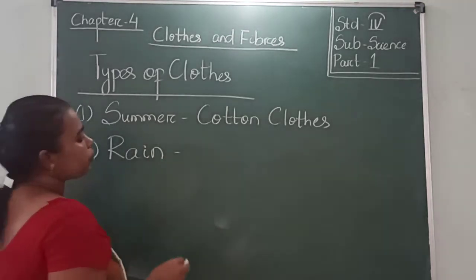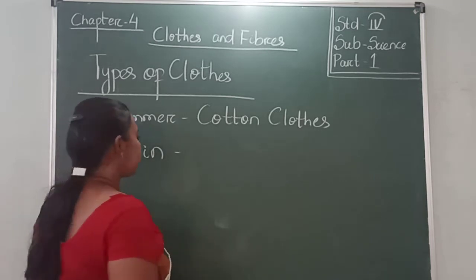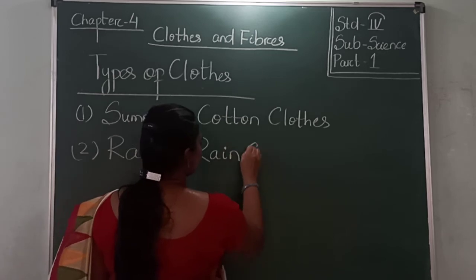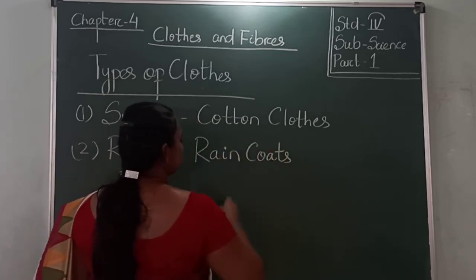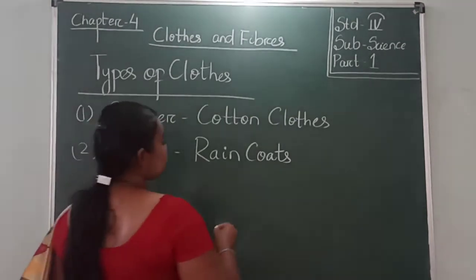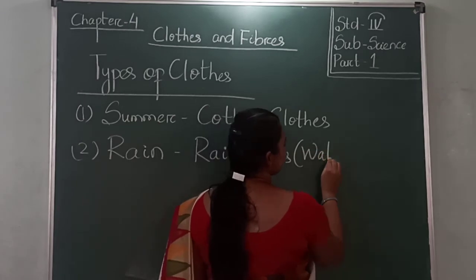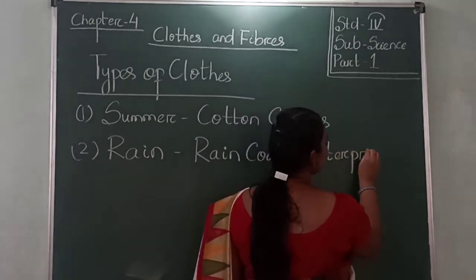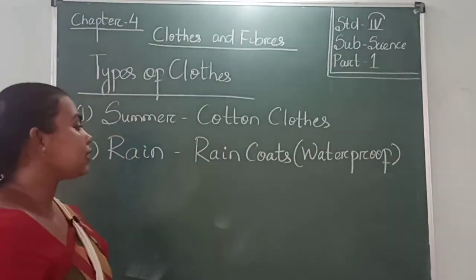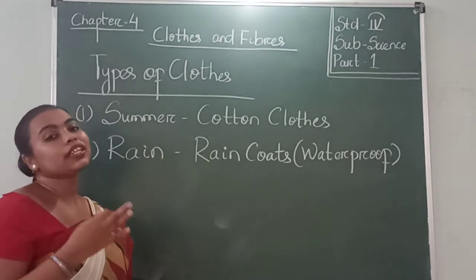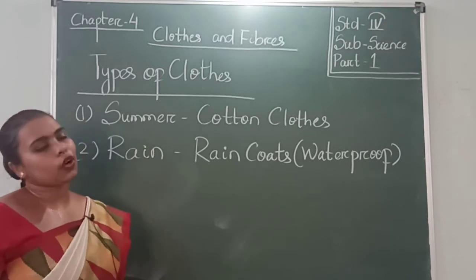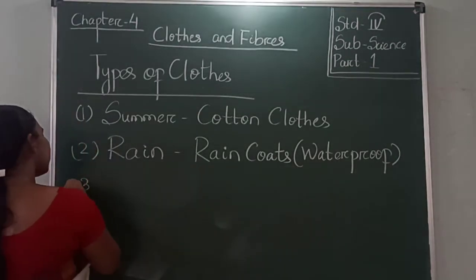When it is raining, we wear a special type of clothing known as raincoats. This raincoat is waterproof — it is made from waterproof material. Raincoats prevent us from getting wet in the rain. If we wear a raincoat over our clothes, we will not get wet.